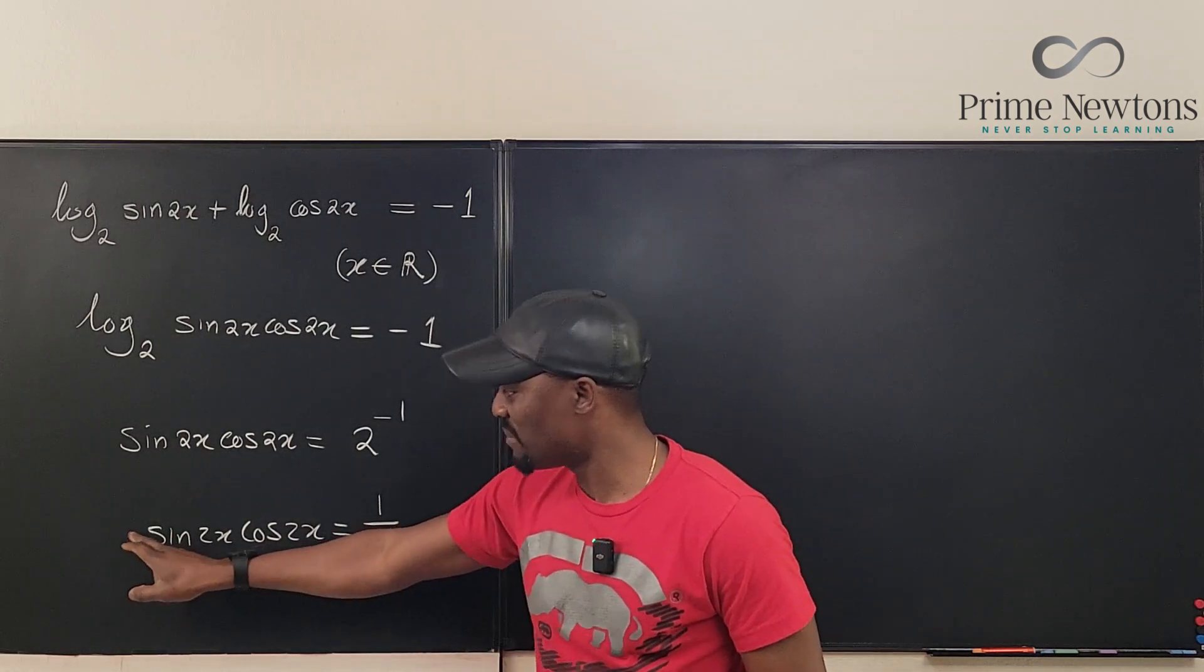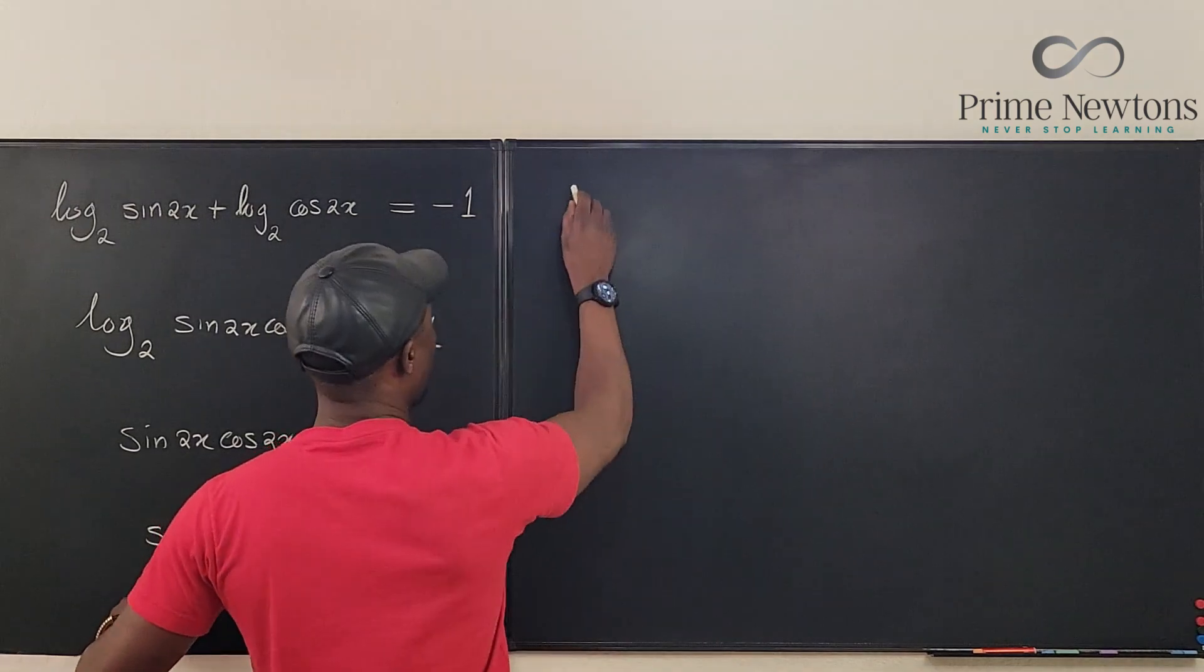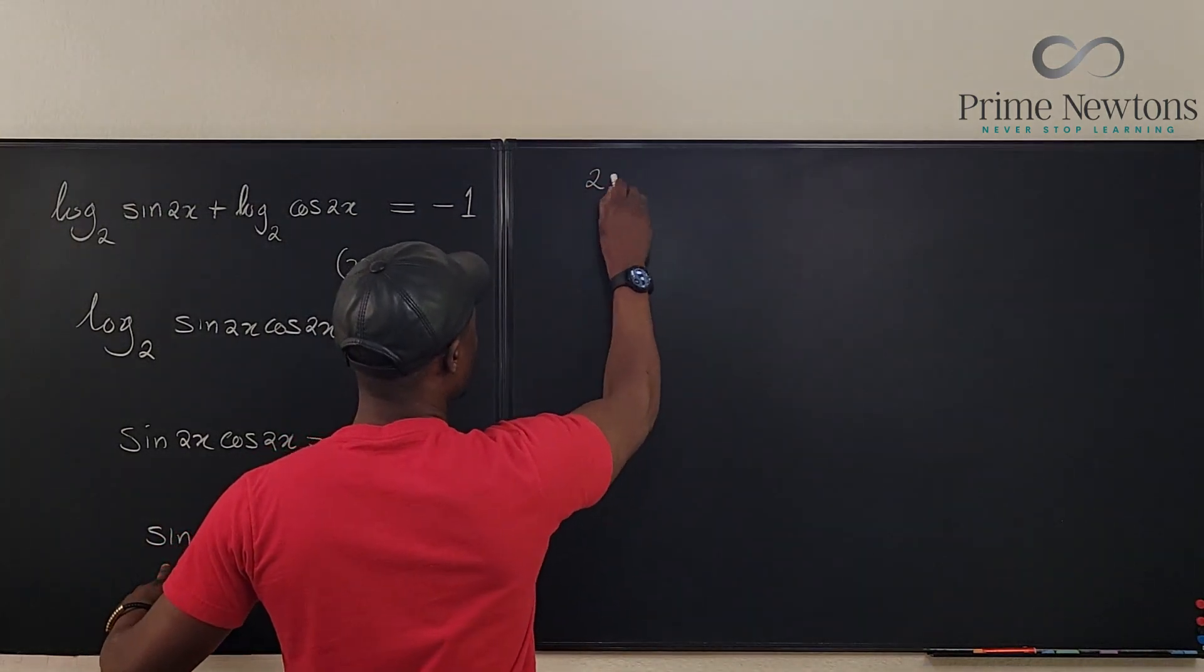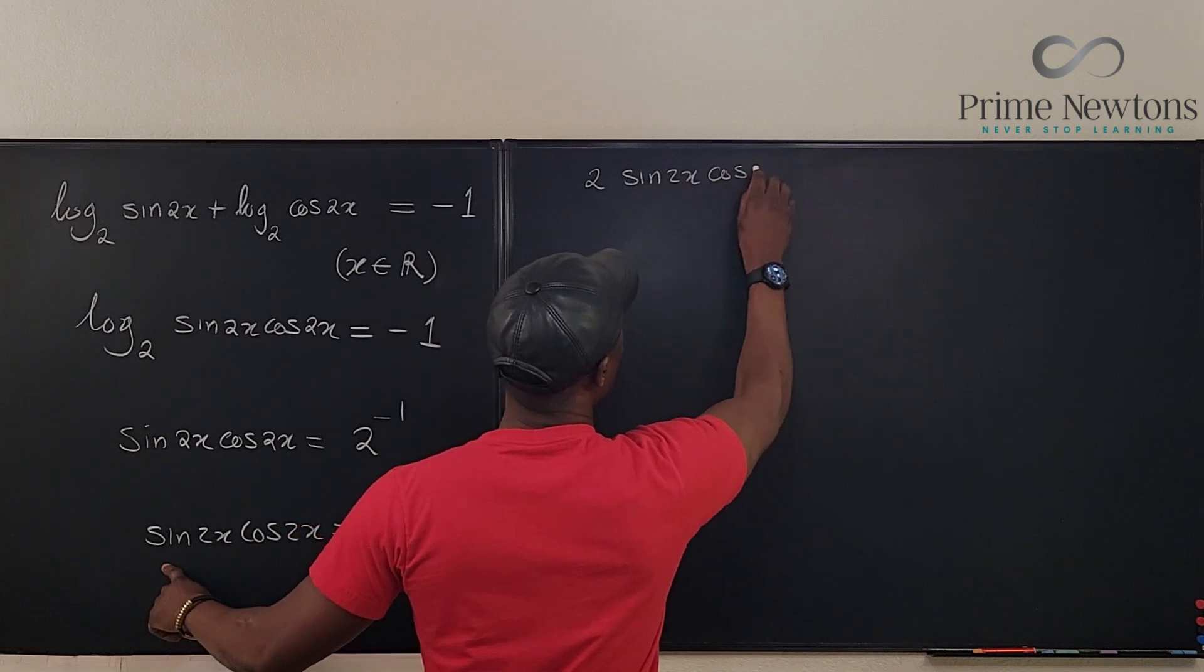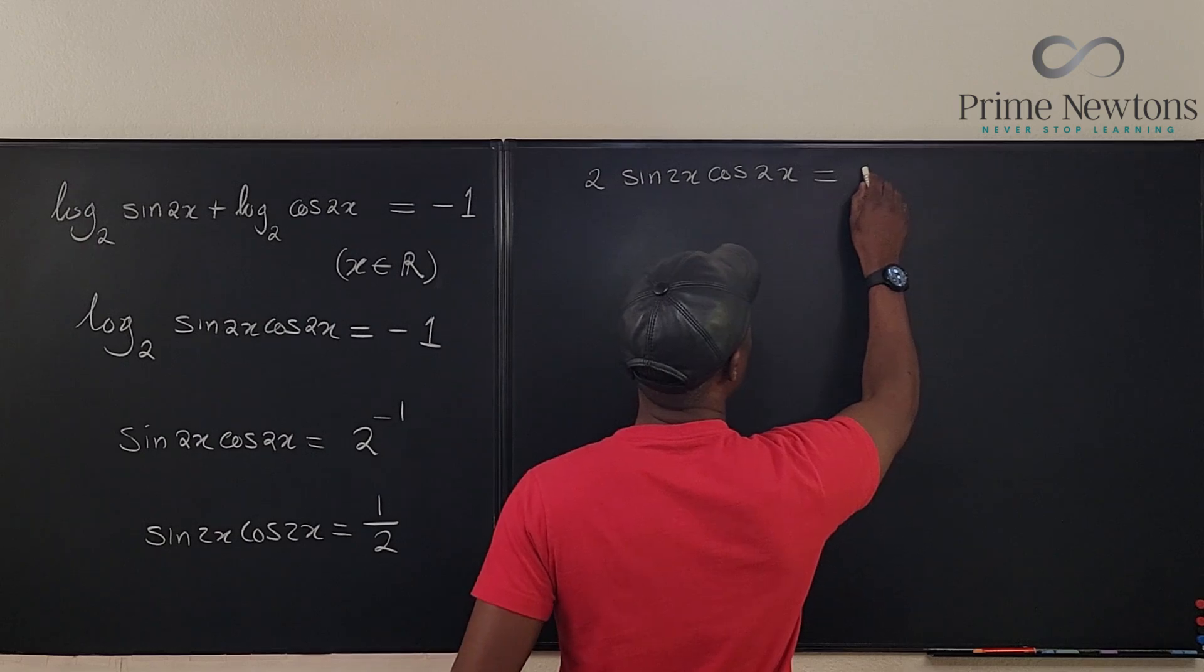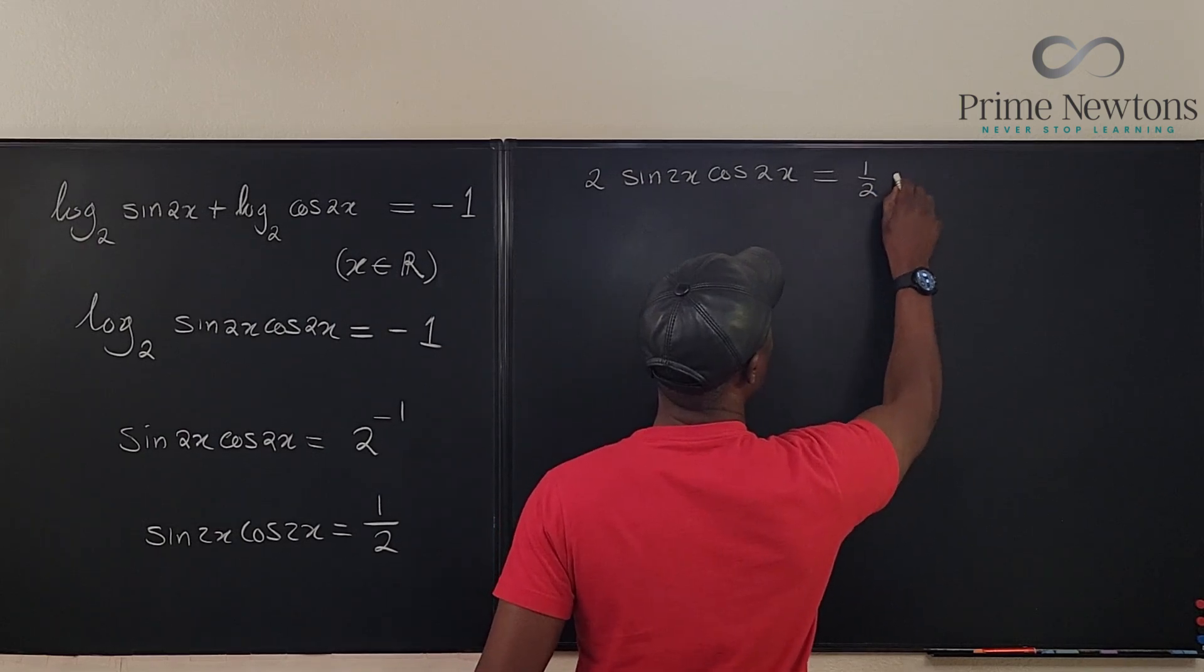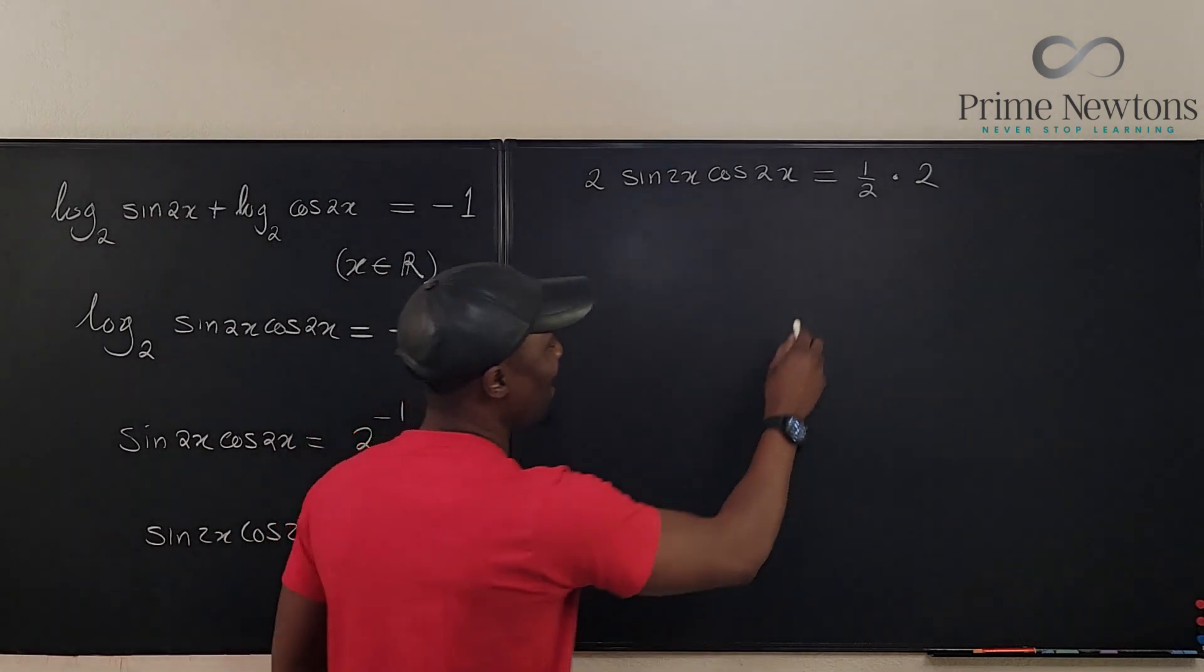I just need to multiply this by 2, because from here if I have 2 sine 2x cosine 2x, I can also multiply this side by 2, which is one half multiplied by 2. So I'm multiplying both sides by 2.